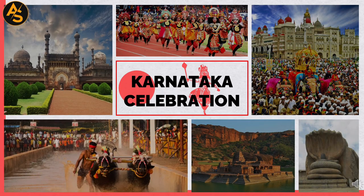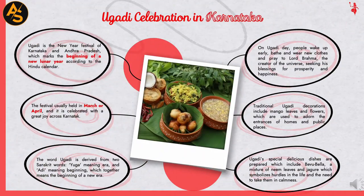Karnataka Celebrations. Ugadi is the New Year festival of Karnataka and Andhra Pradesh, which marks the beginning of a new lunar year according to the Hindu calendar. The festival is usually held in March or April and is celebrated with great joy across Karnataka. The word Ugadi is derived from two Sanskrit words: Yuga, meaning era, and Adhi, meaning beginning, together meaning the beginning of a new era.